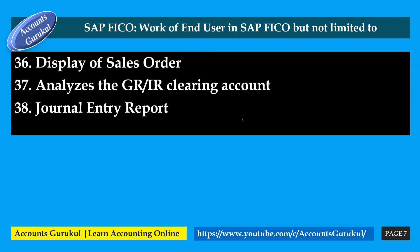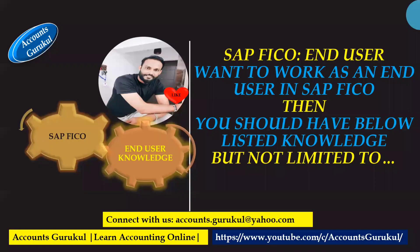Display of sales order. Analyze the GRR clearing account. And the last is journal entry report — whatever journal entries you have posted in the system, how are you going to see the journal entry report from SAP? So, at least if you are thinking of working in SAP as an end user and want to work as an end user in SAP FICO, you should have the above listed knowledge. We have added 32 terms related to your accounting and finance.